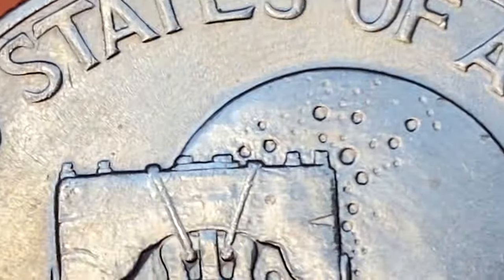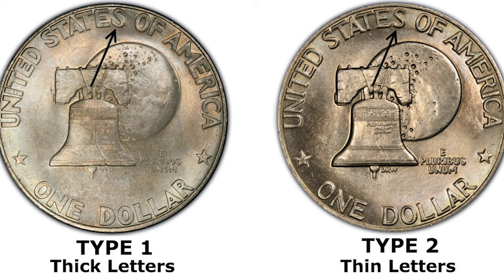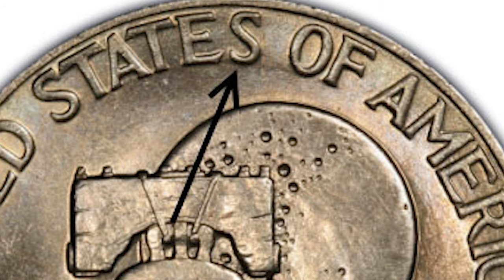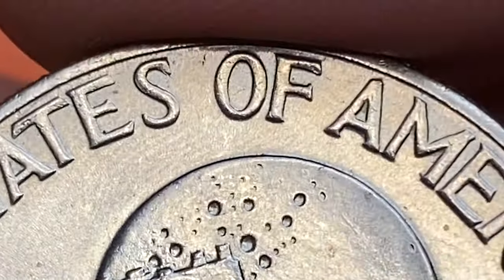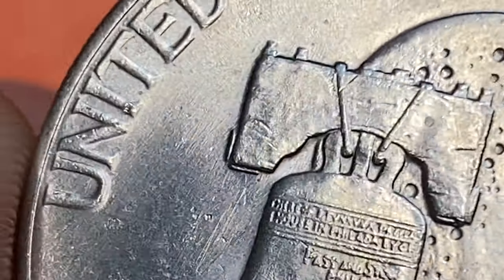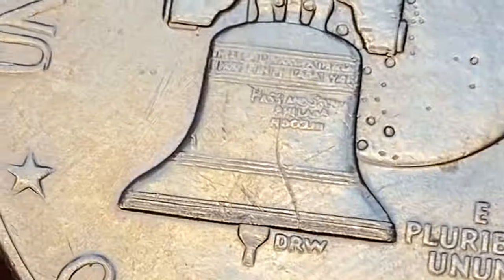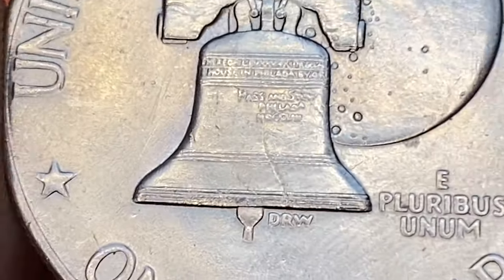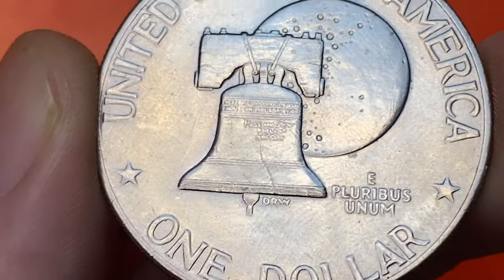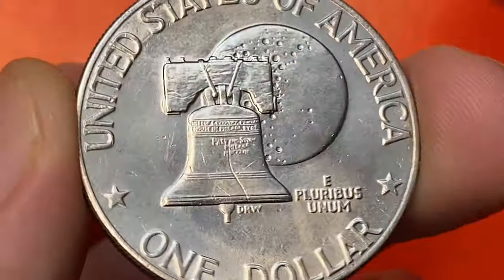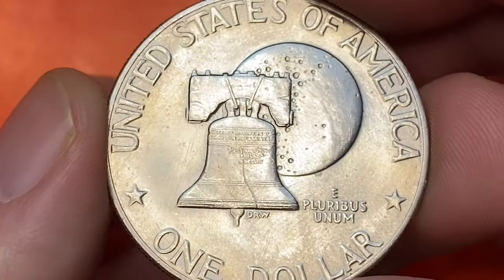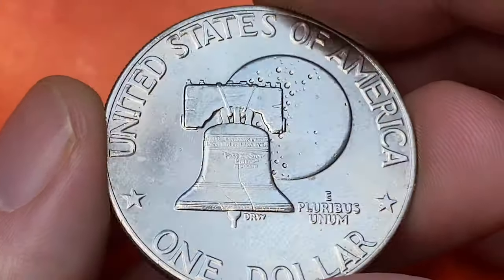It's pretty easy to distinguish Type 1 from Type 2 just by paying attention to the shape of the letter S on the upper lettering. As you can see, our coin displays serif letters, so it falls into the Type 2 category. Type 2 examples at MS-67 are very scarce, with only 15 specimens reported by PCGS.